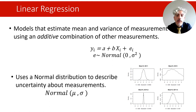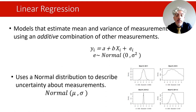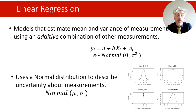Before that I wanted to provide a quick reminder of what we mean by linear regression. Linear regression models basically try to learn about the mean and variance of a measurement variable using an additive combination of other measurements. The basic formula is where the value of an outcome variable y for each individual i equals the sum of parameter a and the product of parameter b and a predictor x, plus an element e representing individual variation from the expected scores.